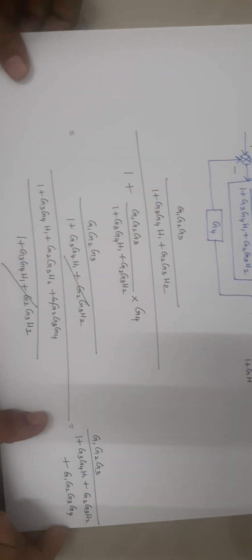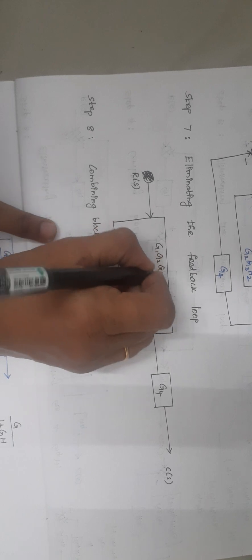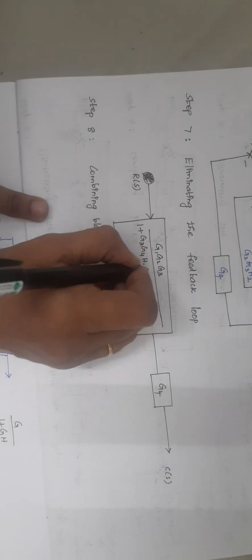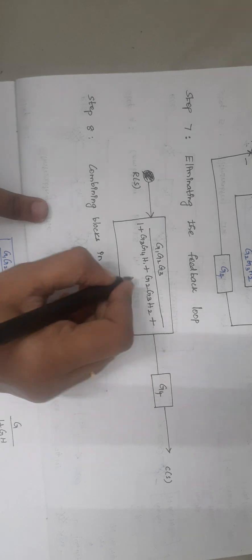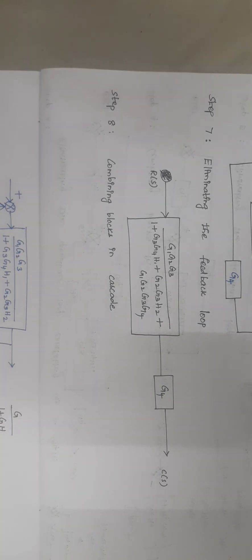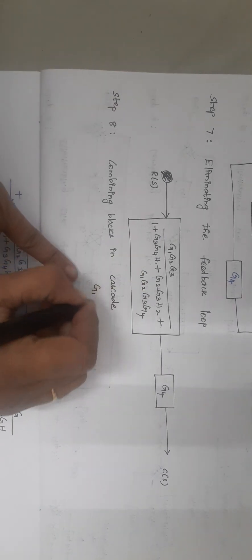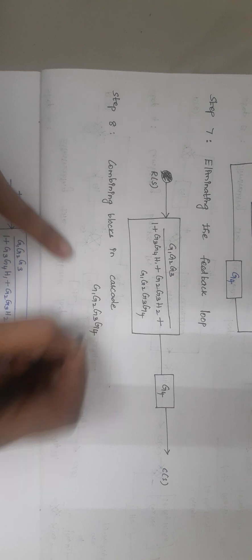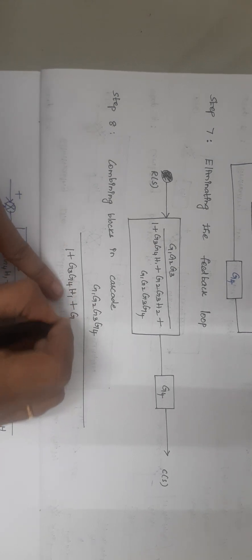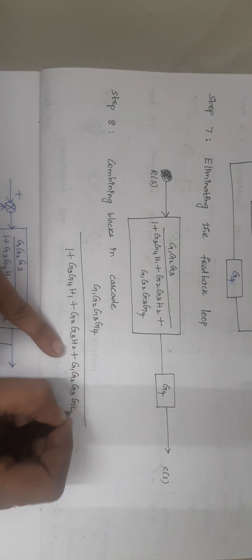After taking the LCM and simplifying, the expression reduces to G1·G2·G3 divided by (1 + G3·G4·H1 + G2·G3·H2 + G1·G2·G3·G4). Combining the final two elements in series gives G1·G2·G3·G4 divided by (1 + G3·G4·H1 + G2·G3·H2 + G1·G2·G3·G4).